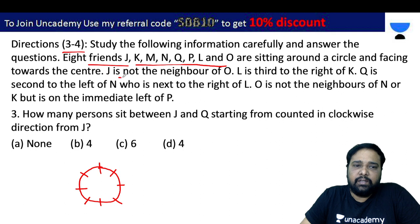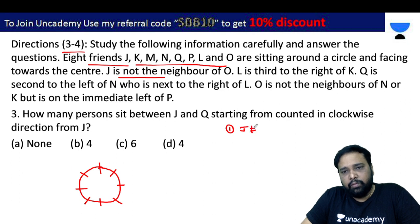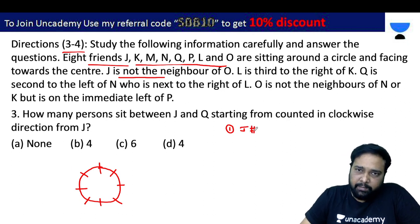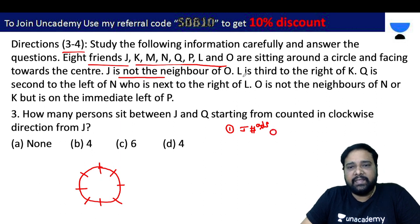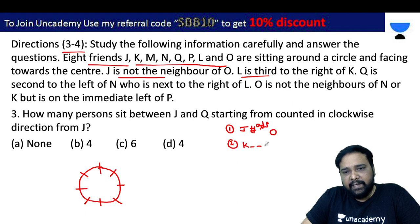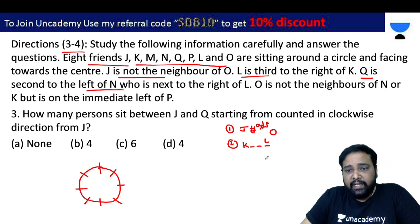The clues are: J is not adjacent to O. L is third right of K. Q is second left of N.